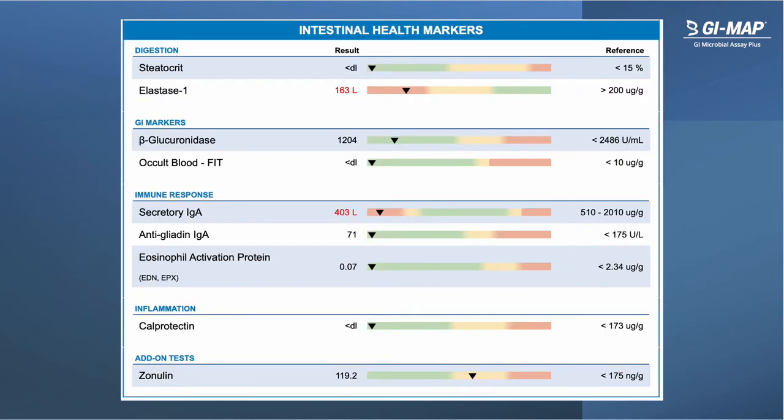Within the intestinal health markers section of GI Map, you'll find a number of markers that reflect various aspects of gastrointestinal health and physiology, including digestive function, detoxification, the presence of occult blood, immune responses, inflammation, and leaky gut. Next we'll walk through each of the markers in this section.